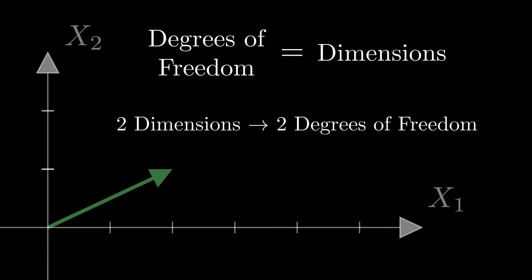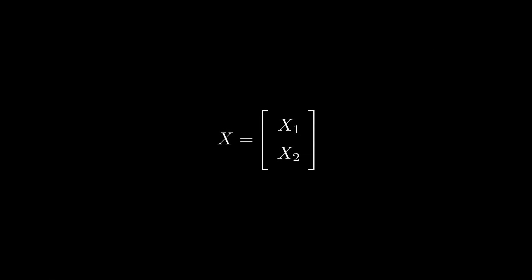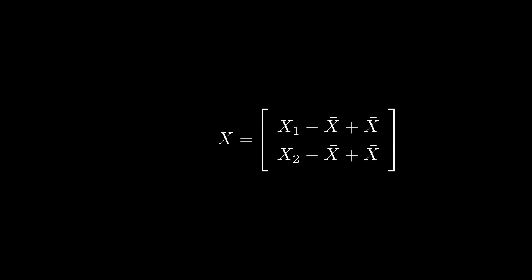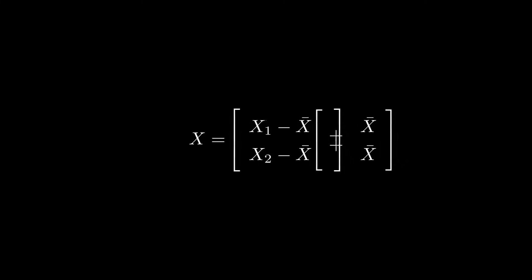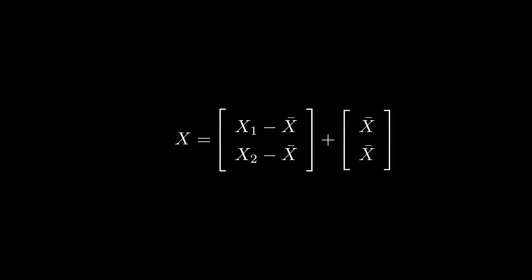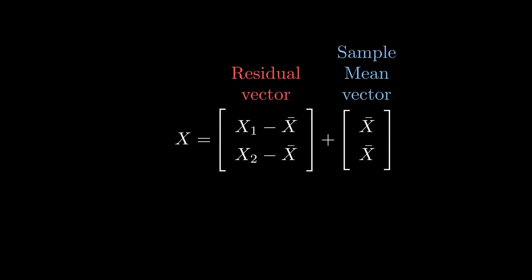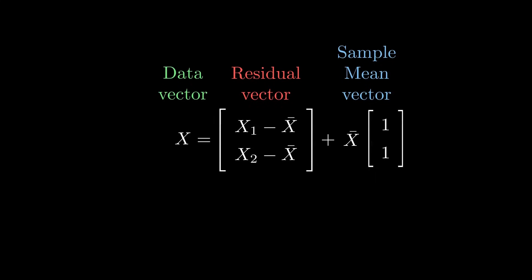Where things get more interesting is when we start decomposing this vector. We're always free to both add a number and subtract it, so we're going to both add and subtract the sample mean of our two observations, which we'll call x-bar. Then we can split these into two different vectors. The vector on the right just has the sample mean for both components, so let's call it the sample mean vector. On the left is a vector of what we call residuals — it's what's left over after we subtract the sample mean from each data point. I'll refer to the original vector as the data vector. We can factor the x-bar out of the mean vector, so we get the mean of x times a vector of ones.